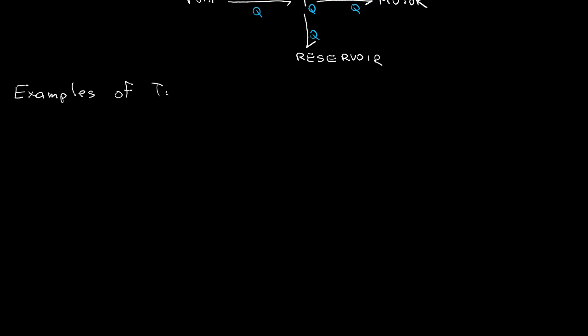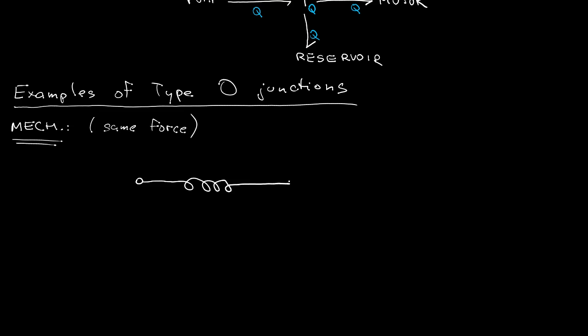And finally examples of type 0 junctions. In mechanical domain, so we are looking for a situation where both participating bodies feel the same force. So let's just consider this spring with different velocities on its ends. So even though the velocities are different both ends feel the same magnitude of force.